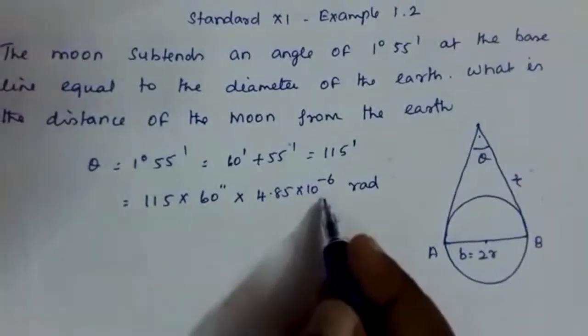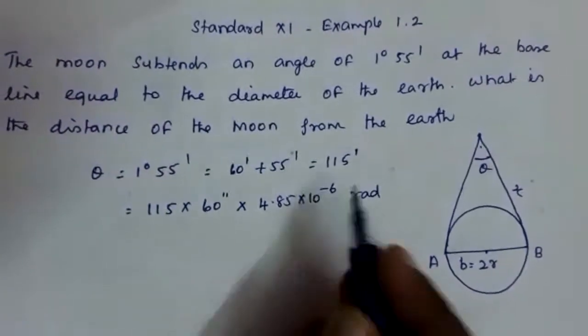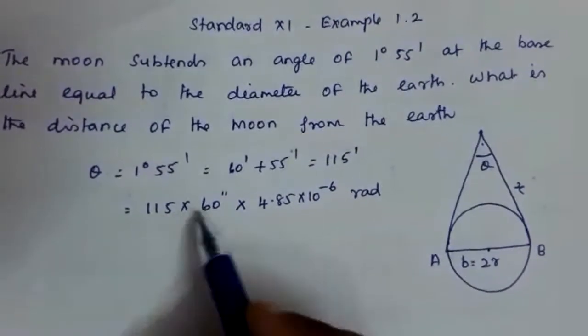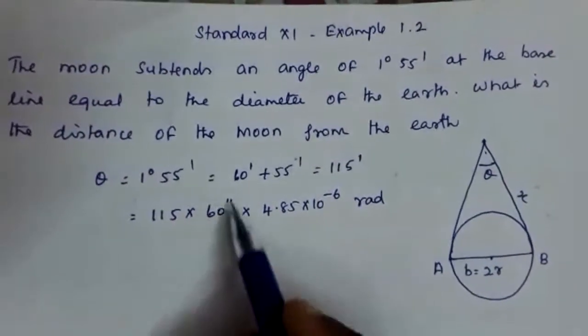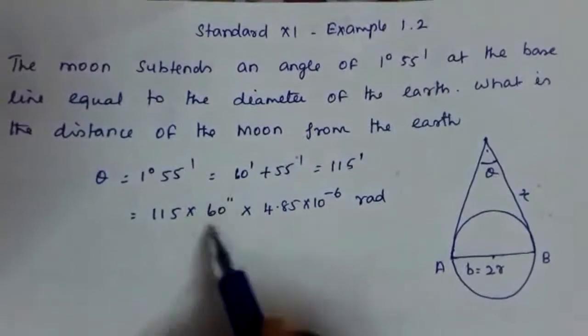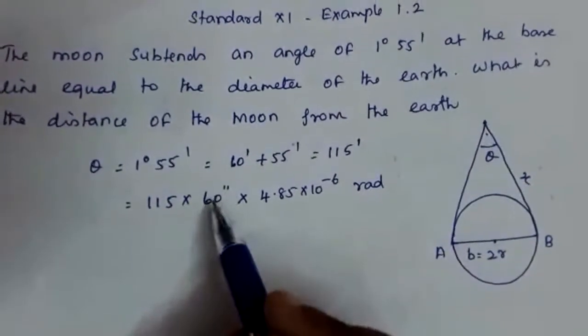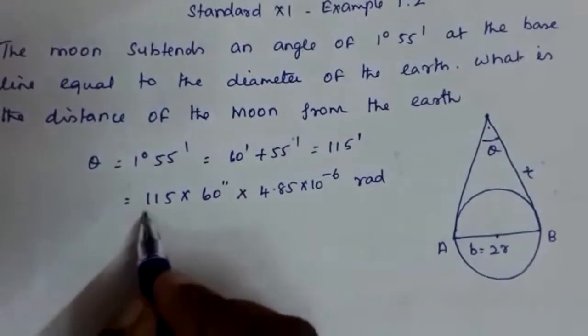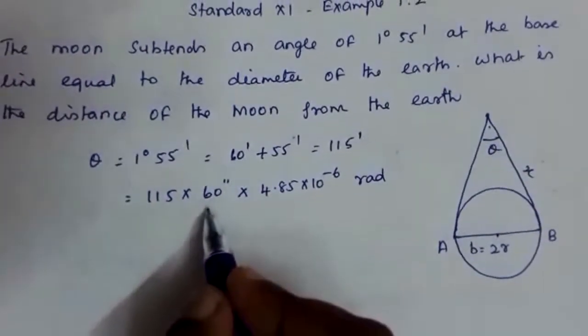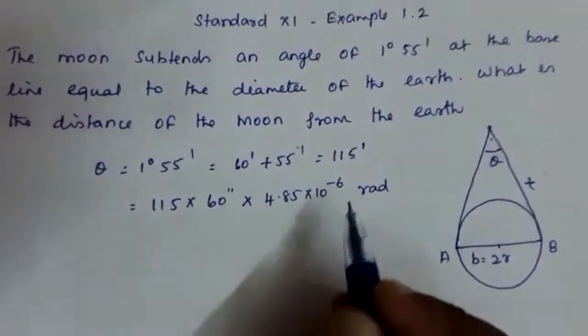So 1 second is 4.85 into 10 raised to minus 6. 1 minute is 60 seconds, so 1 second is this much. So we are multiplying 115 into 60 seconds into 1 second value.